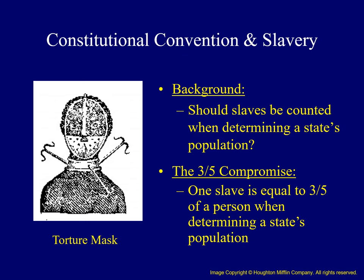This controversy over counting slaves threatened to end the convention in failure. In what would foreshadow future conflicts facing the nation, this one was largely seen along regional lines — north versus south. Eventually, however, an agreement was reached. The 55 so-called greatest minds came up with what has come to be known as the three-fifths compromise. Essentially, it declared that one slave was equal to three-fifths of a person when determining each state's population.